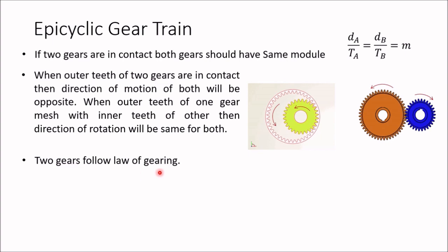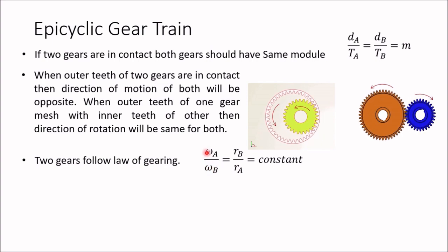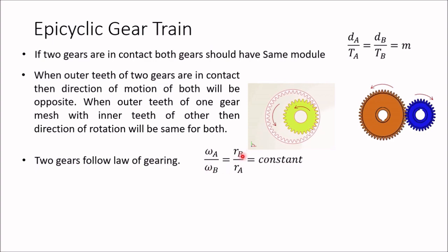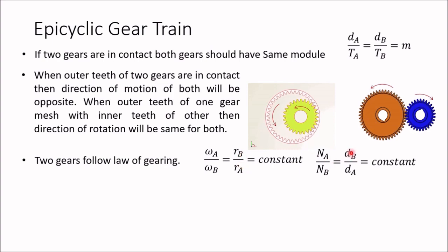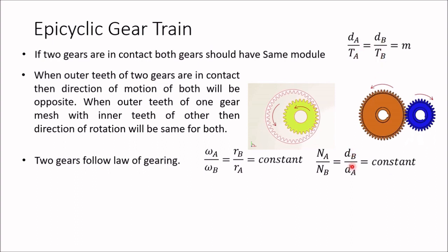Third, two gears follow the law of gearing. For two gears A and B in mesh, the ratio of angular velocities ω_A / ω_B must be constant and equals radius of B divided by radius of A. We can write this using RPM (N) instead of ω, since the 2π/60 factors cancel. So N_A / N_B equals diameter of B divided by diameter of A. Since D/T = module (constant), this gives D_B / D_A = T_B / T_A, so N_A / N_B = T_B / T_A.